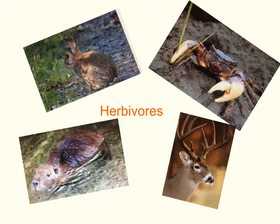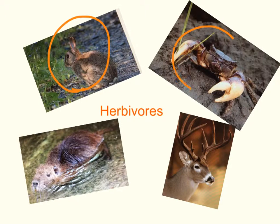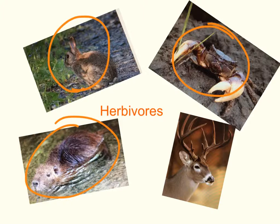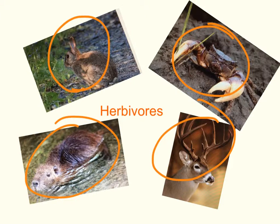Herbivores found in the Louisiana marshlands consist of rabbits, mud crabs, nutria, and white-tailed deer. These animals thrive strictly on plant life as a food source.